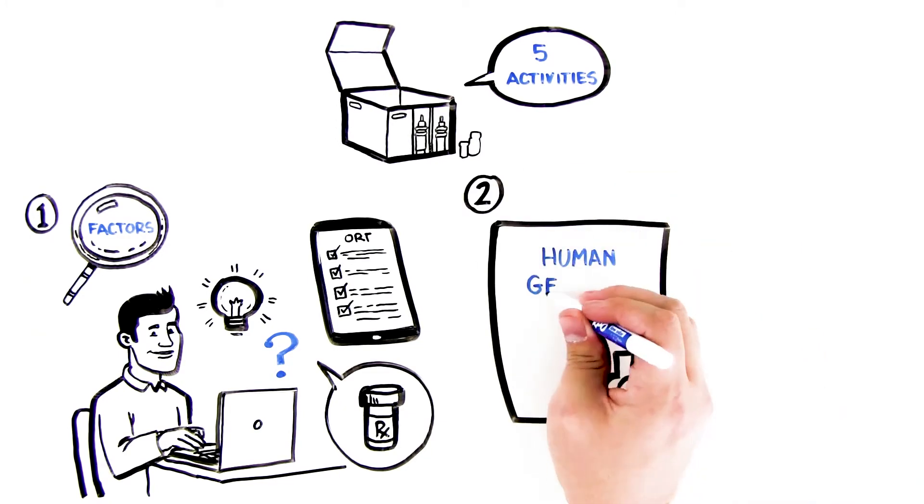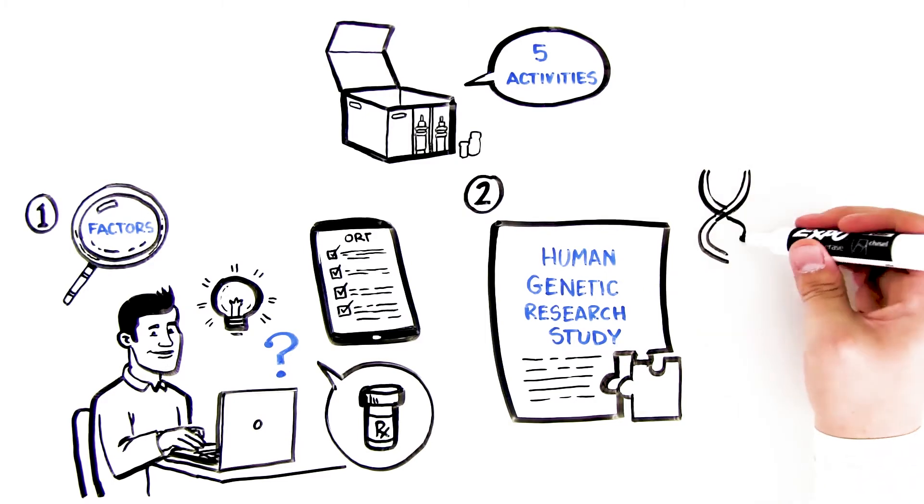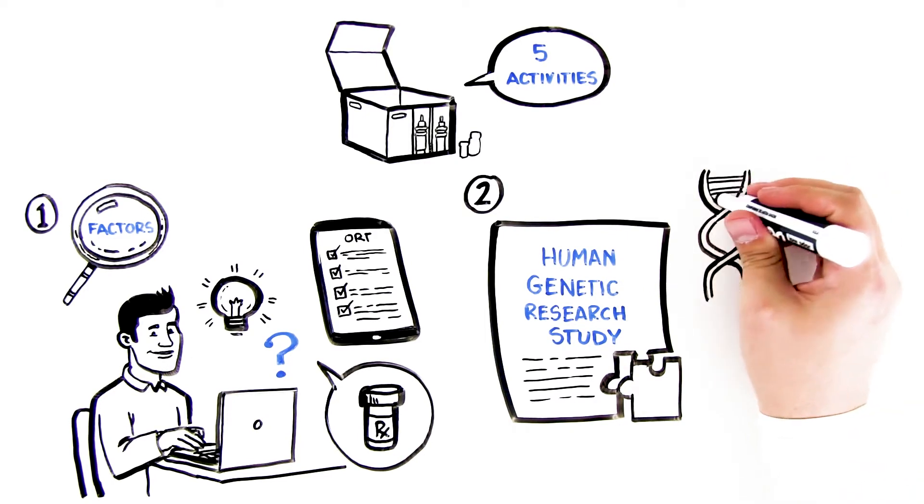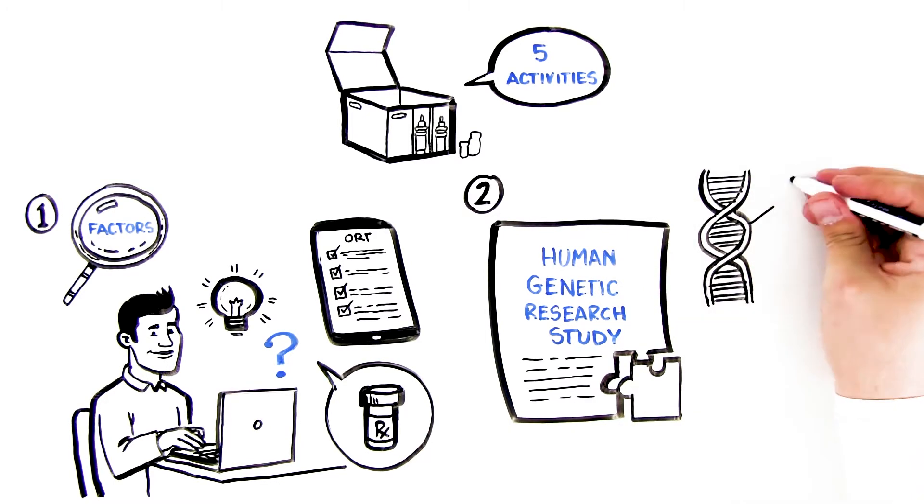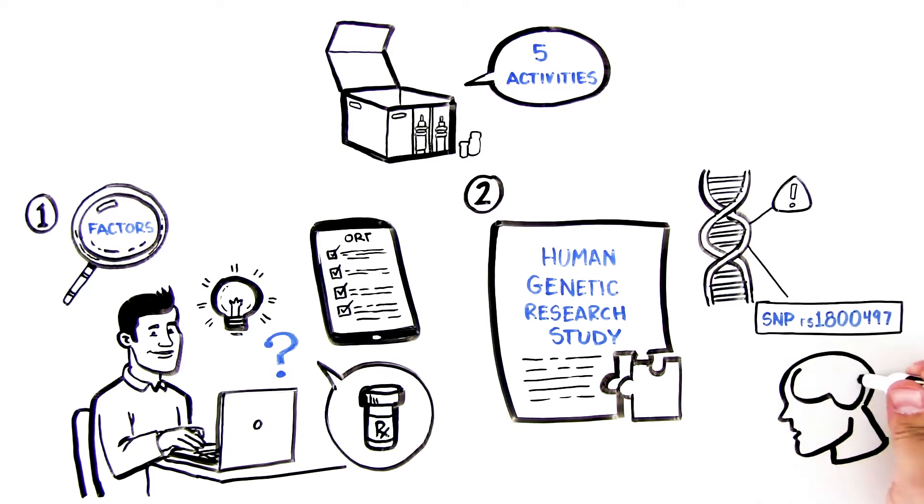Activity 2 involves students designing a human genetic research study. Students identify genetics as a potential factor in assessing risk of opioid dependence, then design a human research study to determine whether SNP RS-1800497 is associated with opioid dependence.